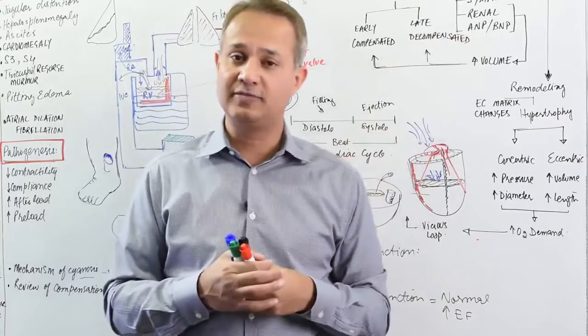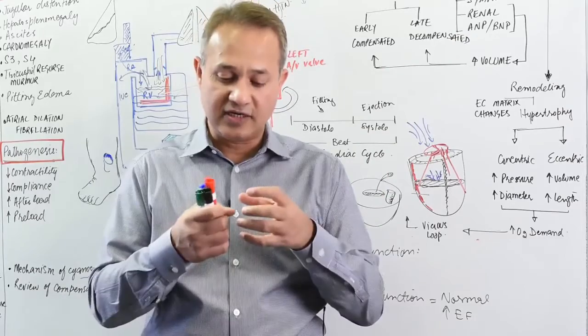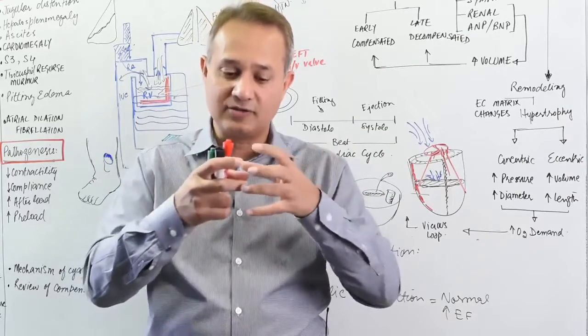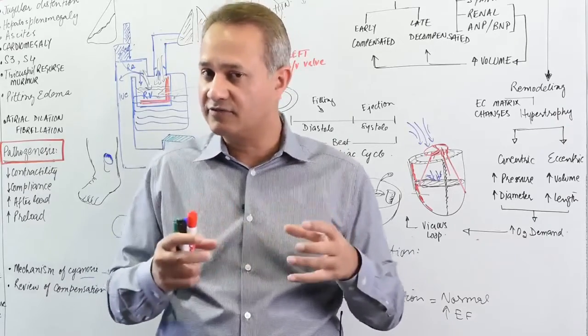Atrial natriuretic peptide (ANP) and brain natriuretic peptide (BNP) are hormones released when the atria or ventricles stretch. ANP comes from atrial stretch and BNP from ventricular stretch.